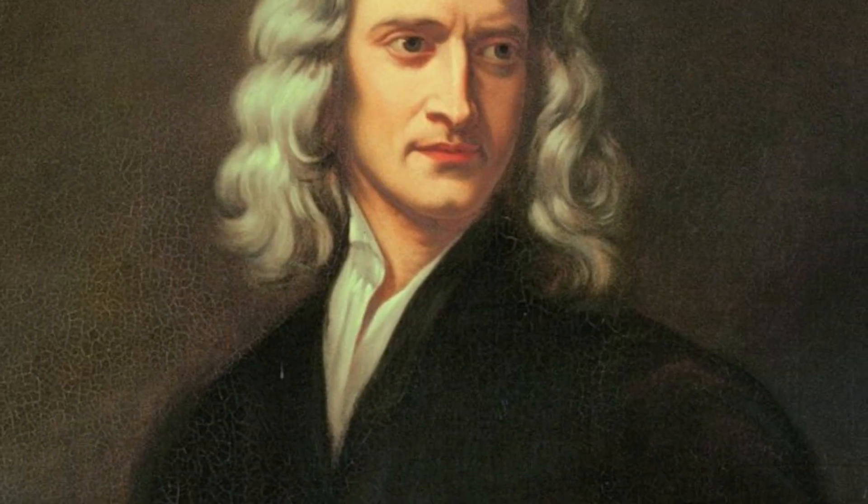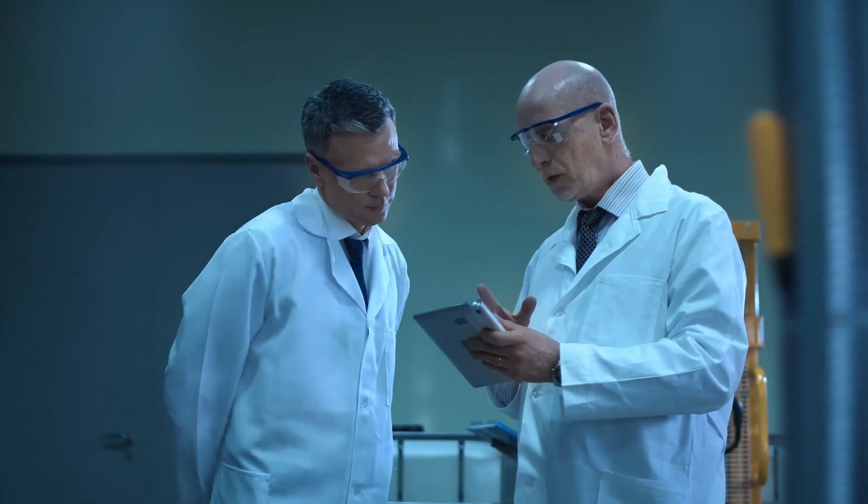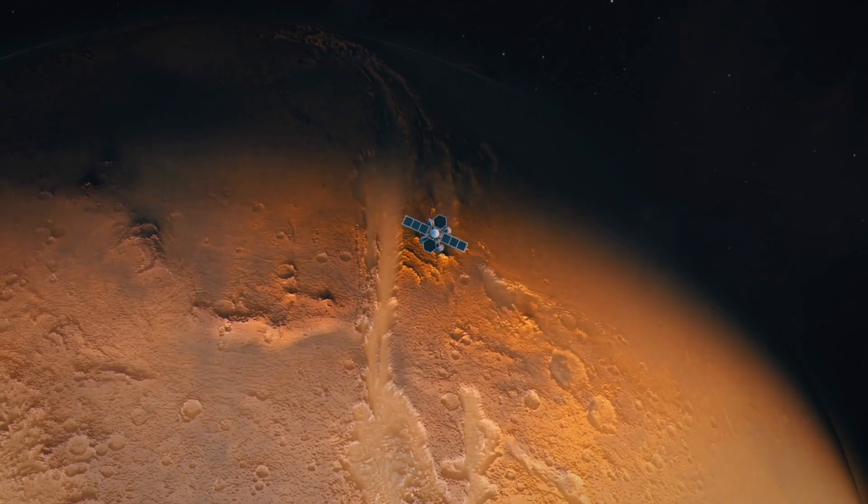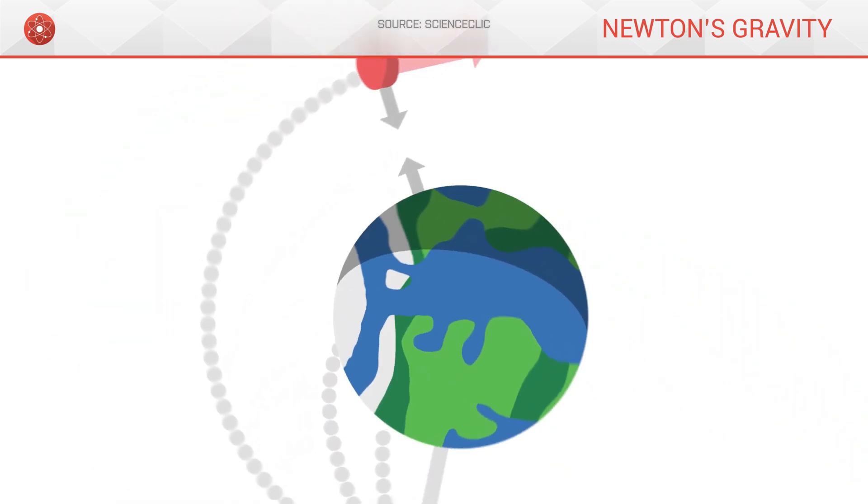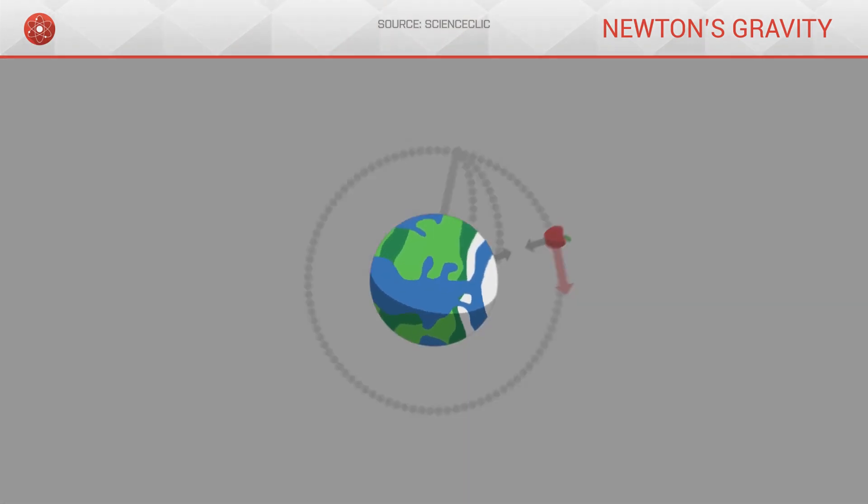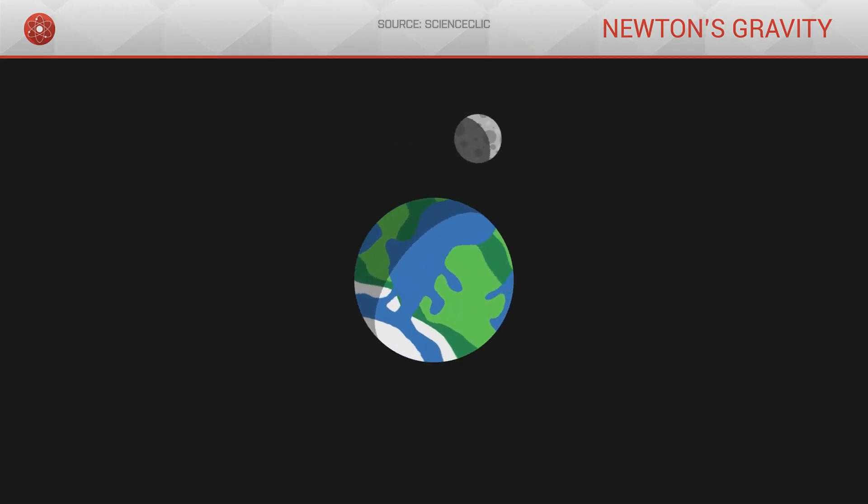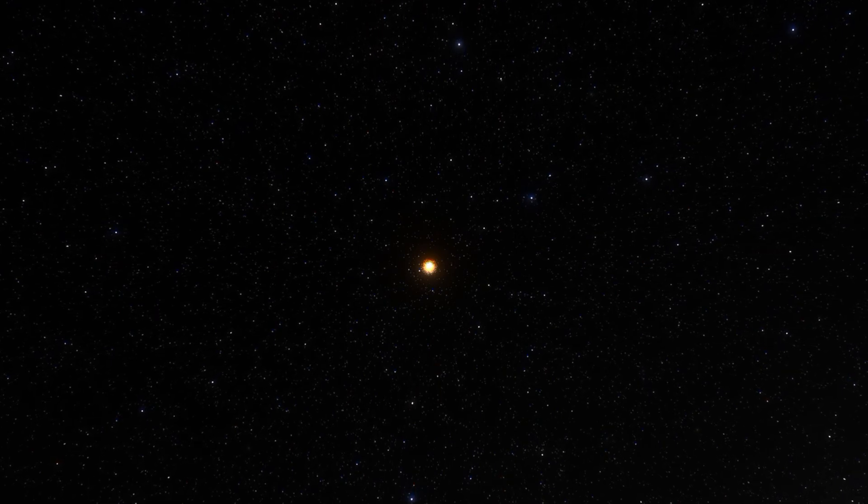Enter Sir Isaac Newton, whose groundbreaking work on gravity revolutionized our understanding of planetary motion. His insight into gravitational forces explained not only why objects fall towards the Earth, but also why celestial bodies follow specific orbital paths. Newton's law of universal gravitation revealed that the same force that pulls an apple to the ground also keeps the Moon in orbit around the Earth, offering a profound unification of celestial and terrestrial physics.